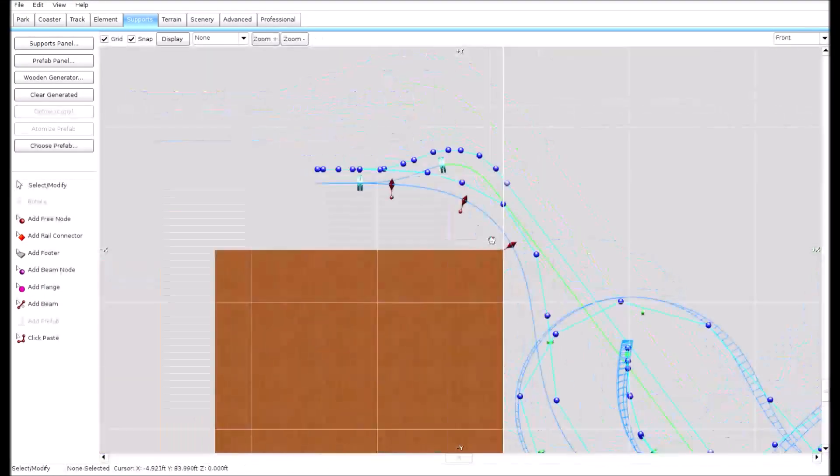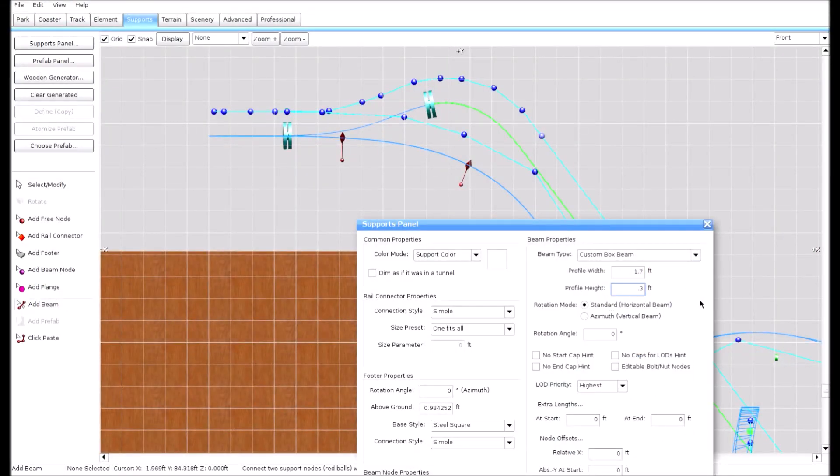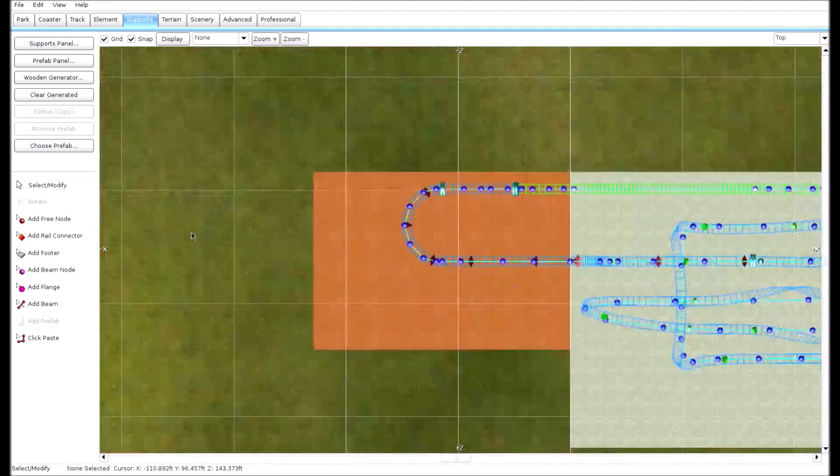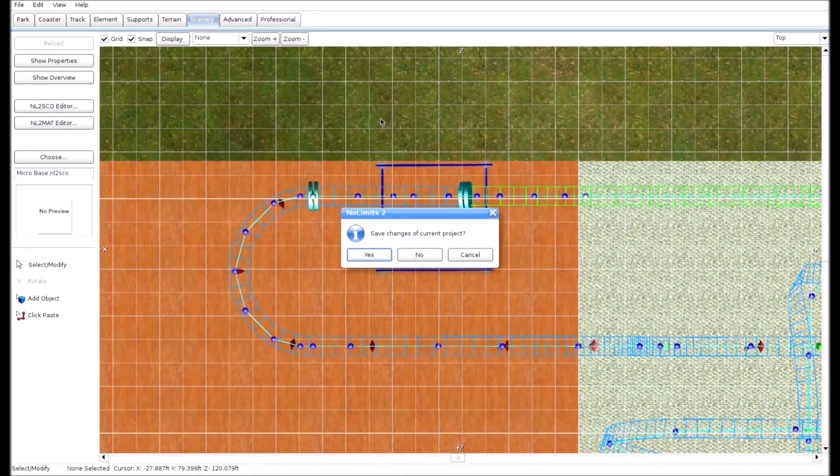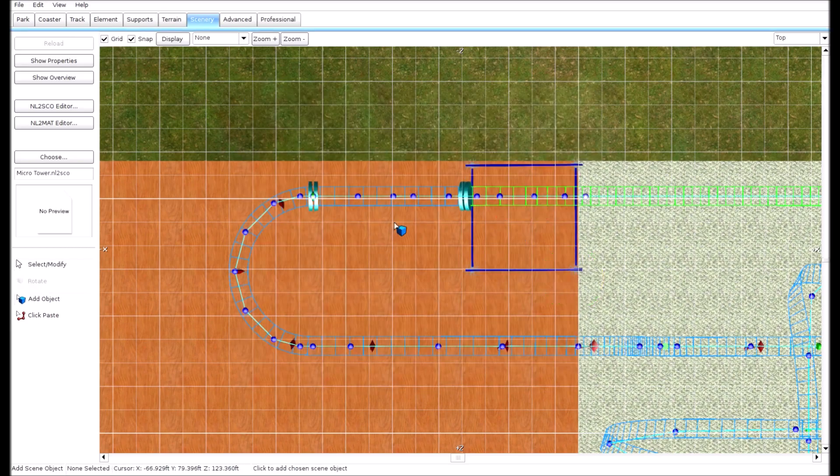It was time to make my big design. I made a replica of the area I had to work with around my bed and my desk. The layout consisted of three inversions with two dive loops and a cutback, and it was a Gerstlauer style coaster.